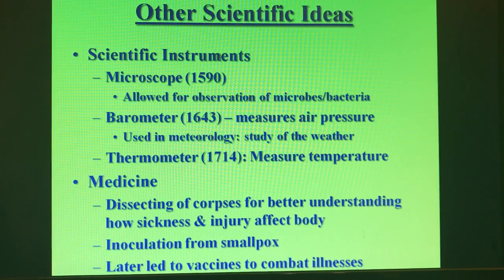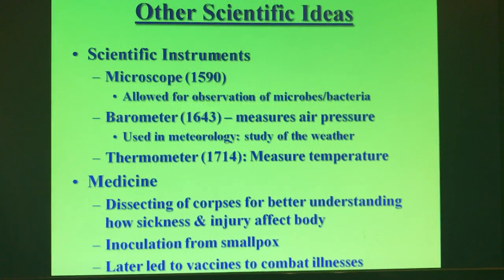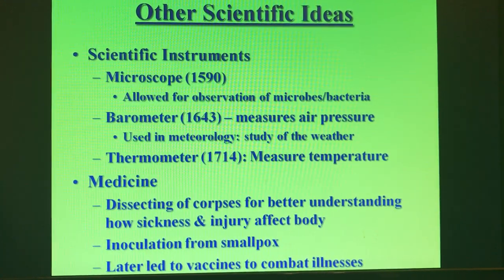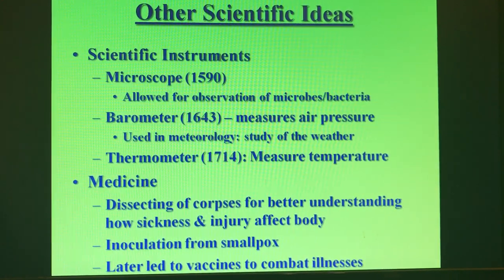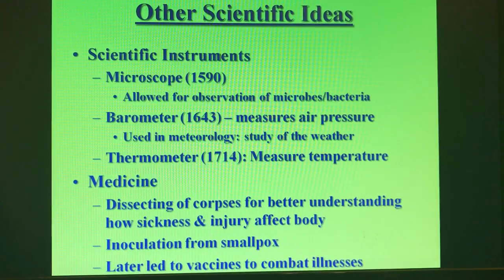Other scientific ideas came out of the Scientific Revolution. Scientific instruments like the microscope appeared in the late 1500s, allowing for the observation of microbes and bacteria. This allowed for greater study of these organisms — finding out how they worked, why they make people sick, which ones are bad, which ones are good. A lot of those ideas started with observation, and the microscope made that possible.